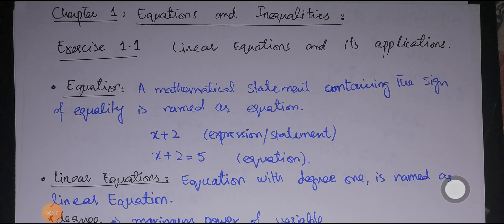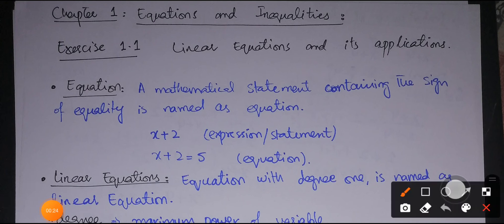First, I am going to define what is meant by an equation. A mathematical statement containing the sign of equality is named as an equation. Before that, we will discuss the four basic mathematical operations that relate two objects: addition, subtraction, multiplication, and division. The equality symbol means 'equals to.'